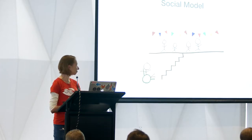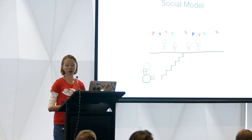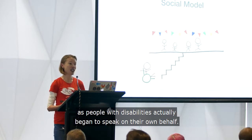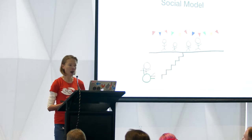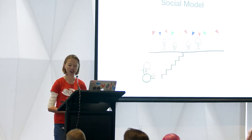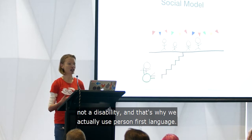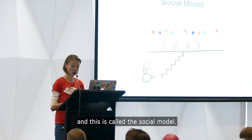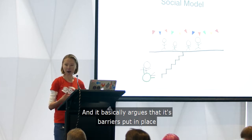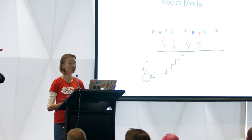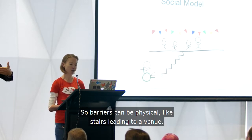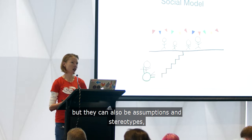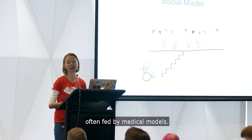The social model is in direct opposition to the medical model. Basically, it was born in the late 1960s on the back of the civil rights movement in the US as people with disabilities actually began to speak on their own behalf. And they put forward this radical idea that they were people first, not a disability. And that's why we actually use person-first language — they developed a way to talk about disability, and this is called the social model. And it basically argues that it's barriers put in place by society that cause disability rather than somebody's impairment. So barriers can be physical, like stairs leading to a venue, but they can also be assumptions and stereotypes often fed by medical models.